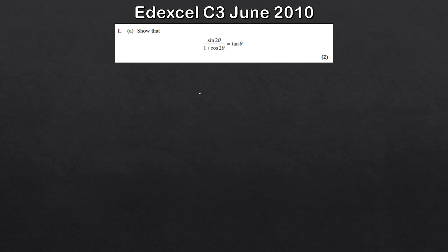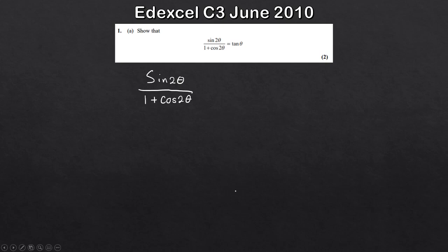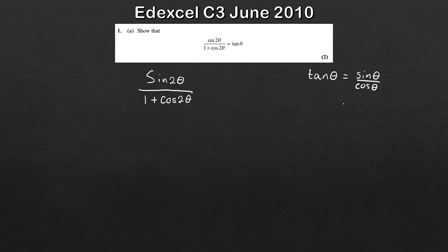So this first one — we've got sine 2θ divided by 1 plus cos 2θ, and what we want to show is that this is equal to tan θ. Think about these as a bit like a problem solving exercise. What I want to get at the very end is tan θ, and tan θ on its own is quite difficult to get a hold of, but we can express that as sine θ divided by cos θ. Given that this is just in terms of sine and cos, that's going to be the end result — sine θ over cos θ.